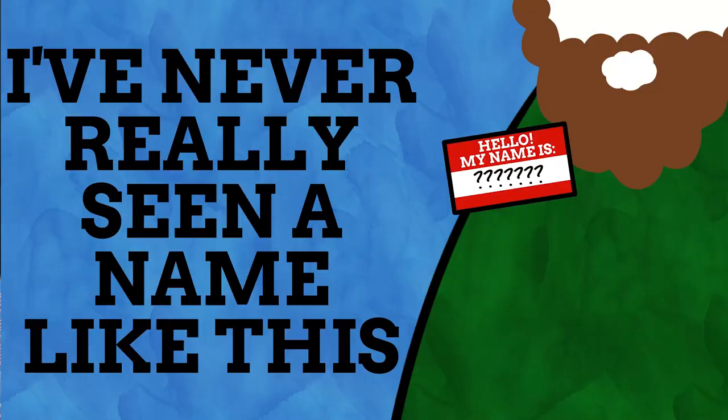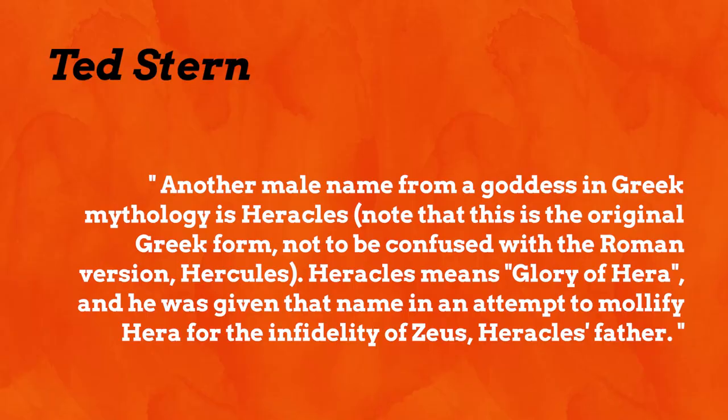I want to share some of the thoughts you guys had on last week's name of Dimitri. Ted Stern said another male name from a goddess in Greek mythology is Herakles — note that this is the original Greek form, not to be confused with the Roman version Hercules. Herakles means glory of Hera, and he was given that name in an attempt to mollify Hera for the infidelity of Zeus, Herakles' father. That's a fantastic example of a male name deriving from a female god.